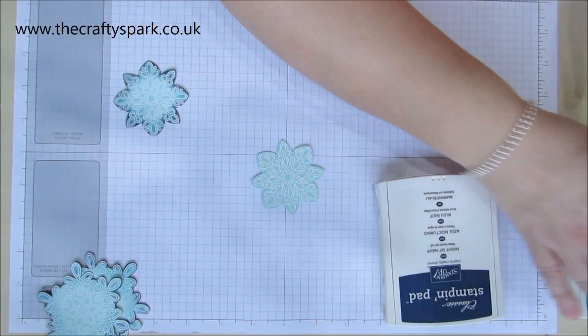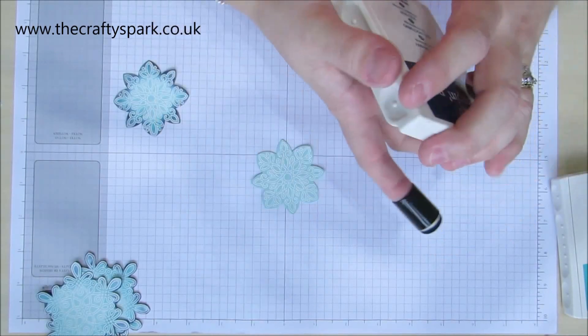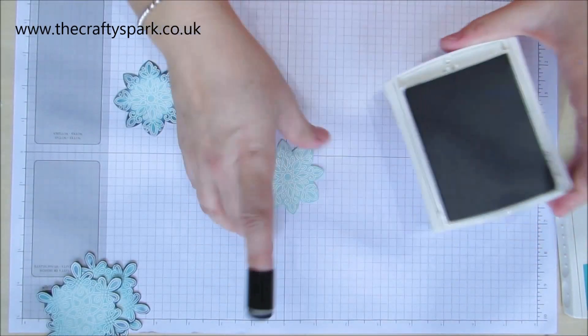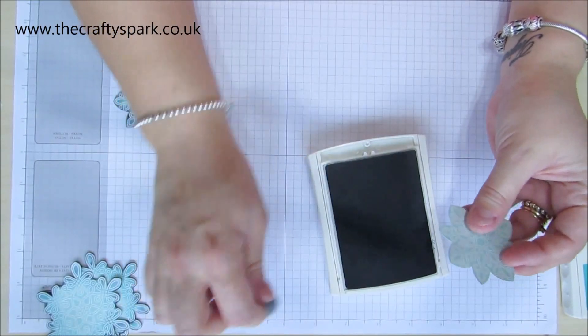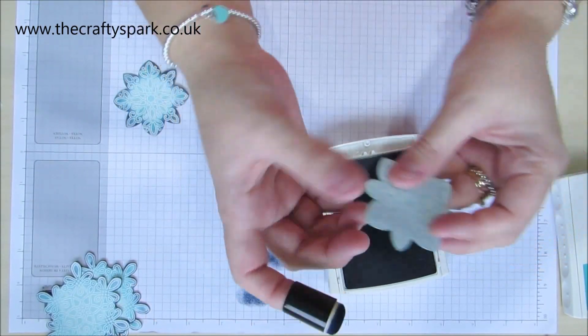So we're going to start with night of navy ink and an ink dauber, which sits very nicely on the end of your finger. Now we don't want too much of this because obviously it's quite dark, so let's just dab a bit of it off.